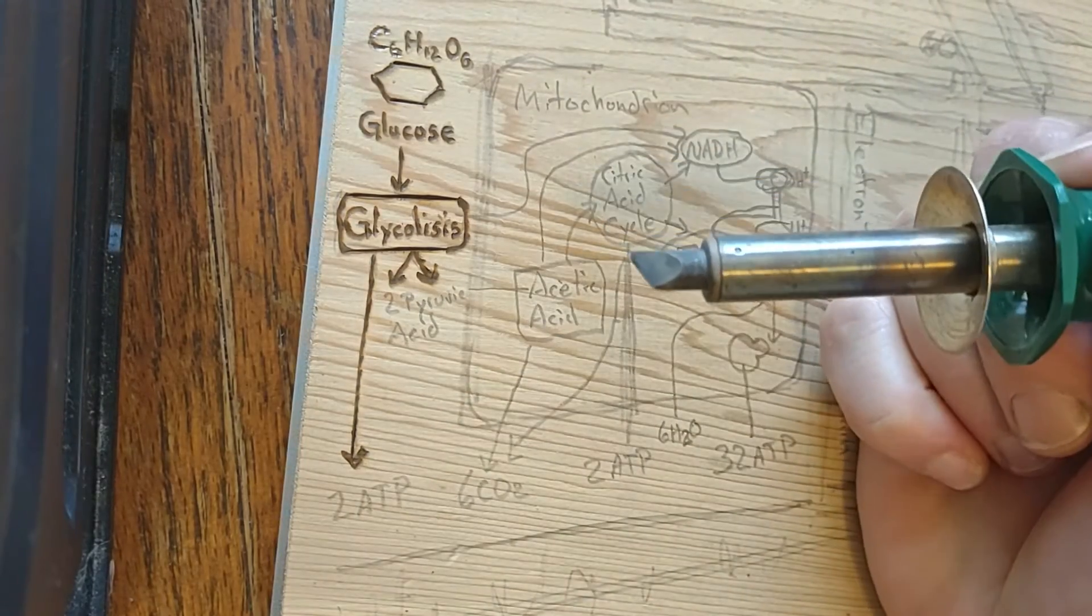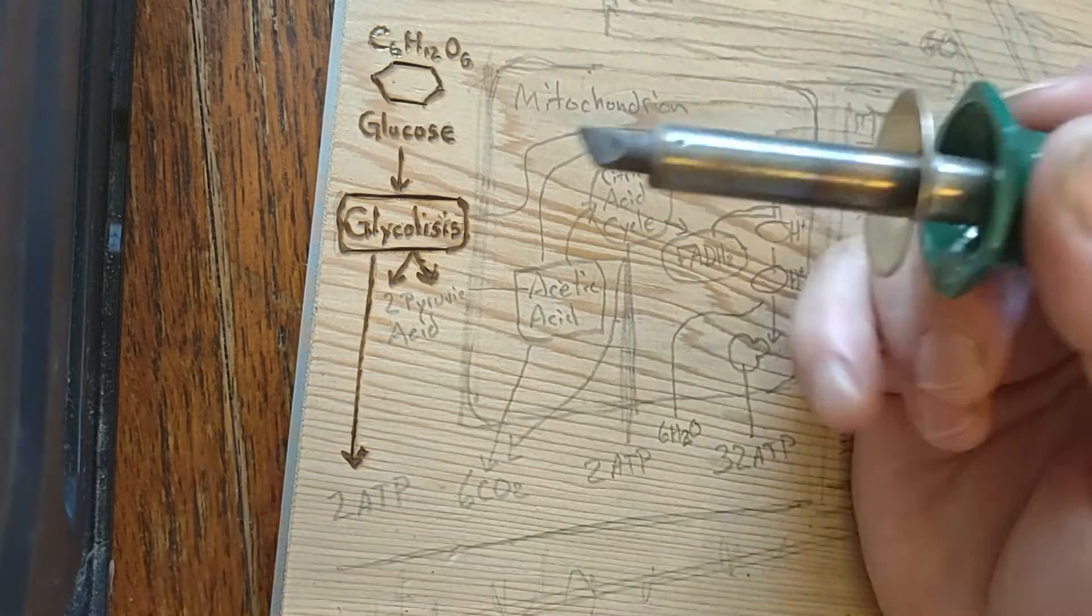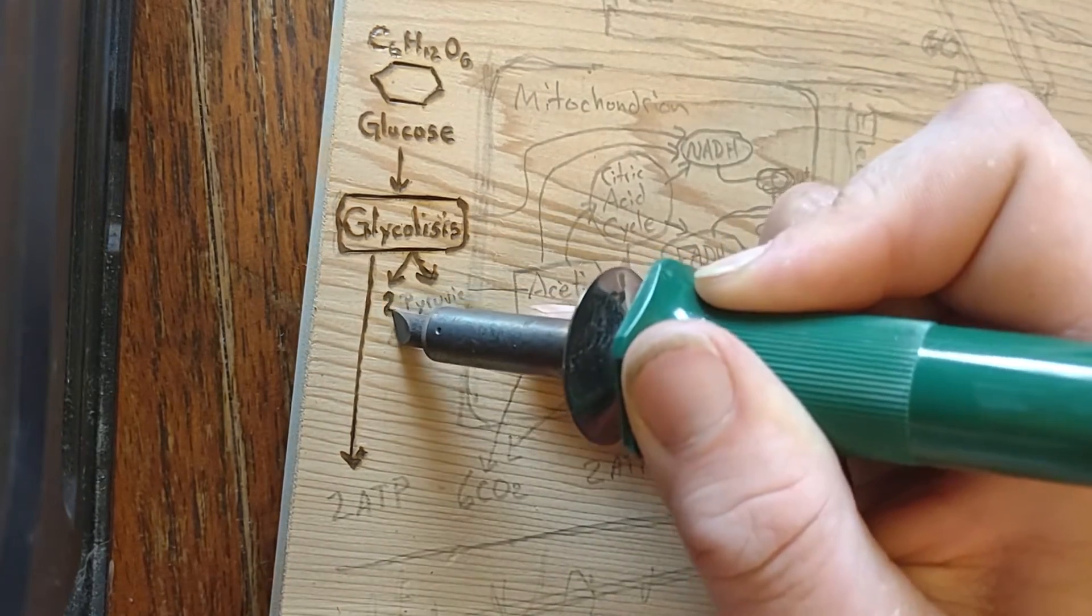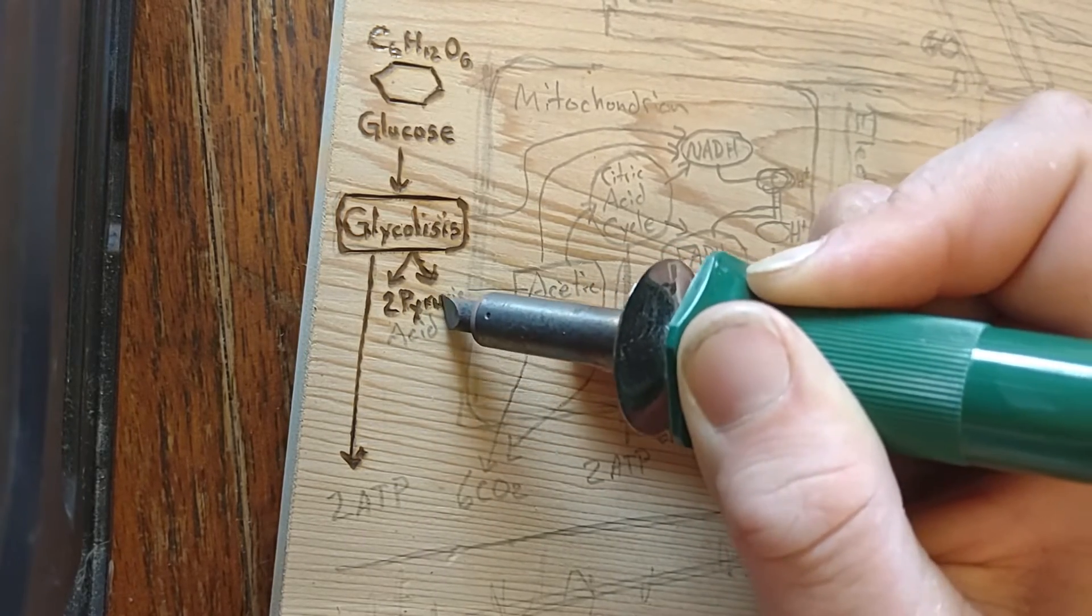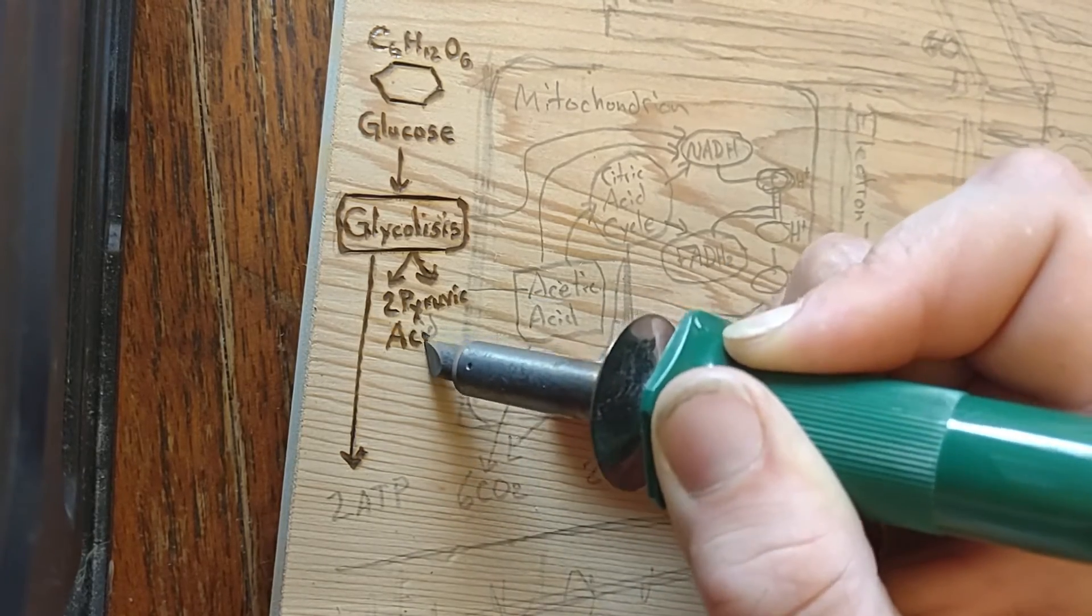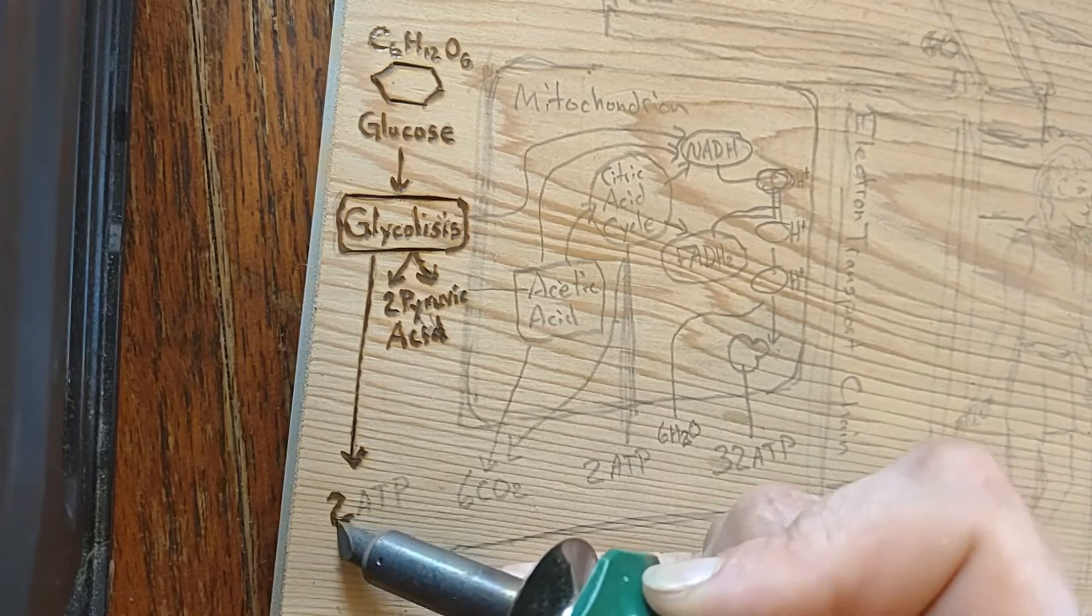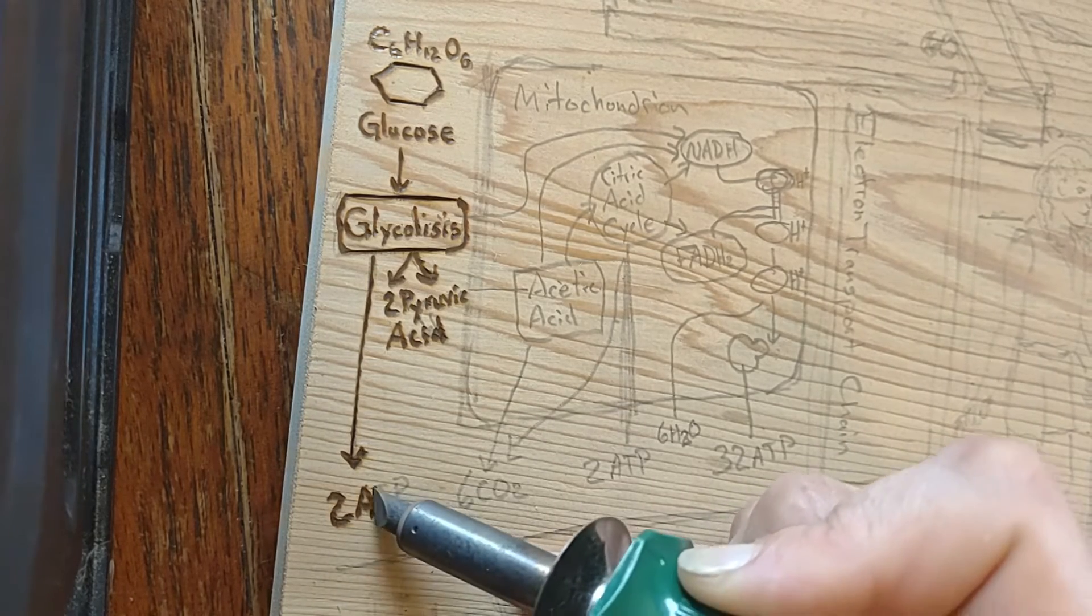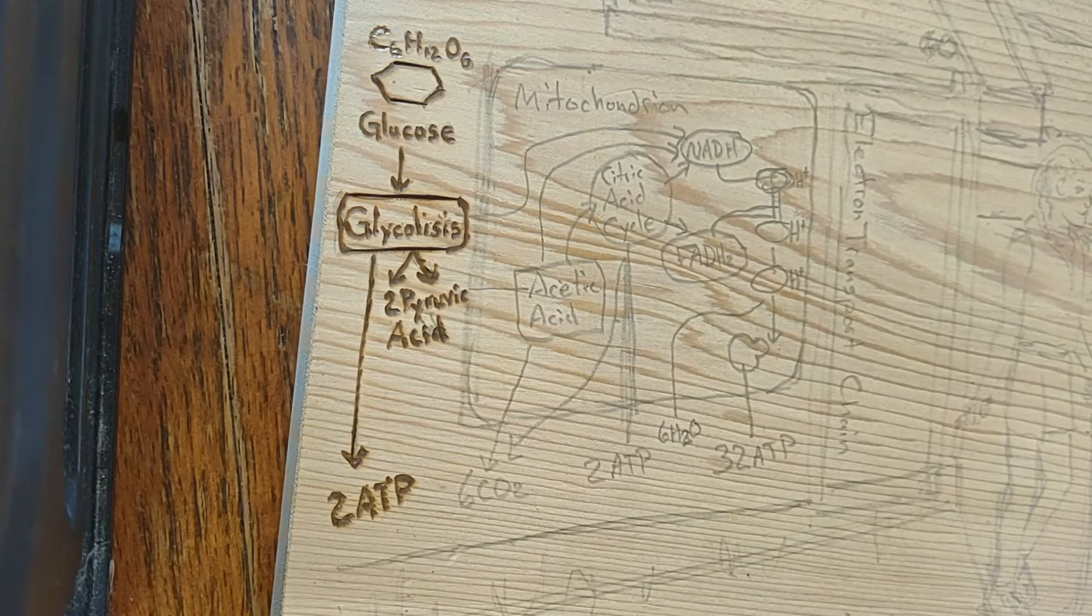Starting with glucose, one ATP is used to donate a phosphate to glucose to produce glucose 6-phosphate. Glycogen can be converted into glucose 6-phosphate as well with the help of glycogen phosphorylase. During energy metabolism, glucose 6-phosphate becomes fructose 6-phosphate.